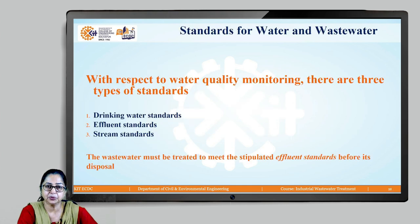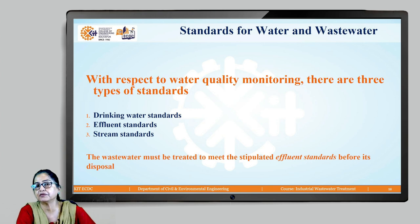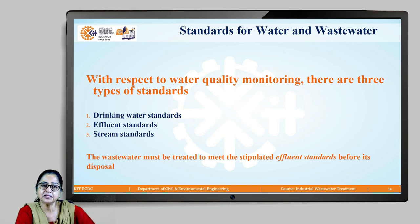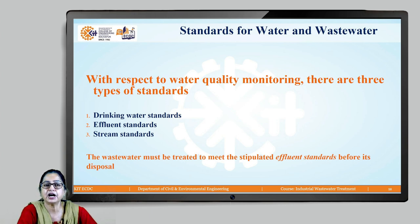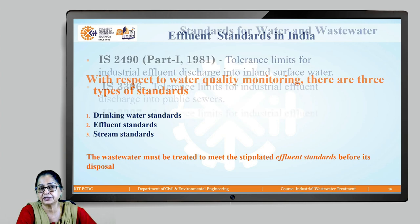Normally for water quality monitoring, we have different types of standards. The first is drinking water standards. The second is effluent standards, which refers to standards to be met by treated wastewater before disposal. The third is stream standards, which are indicators of quality of water flowing in streams and rivers. For this course, we will refer to effluent standards — the treated wastewater must meet these effluent standards before an industry can dispose of it.